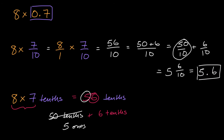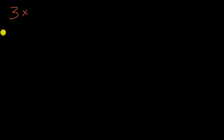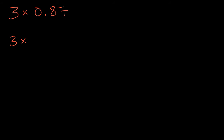Let's do another example that's a little bit more involved. Let's figure out what three times 0.87 is. Pause this video and try to figure that out. We could say this is the same thing as three times 87-hundredths.